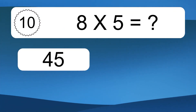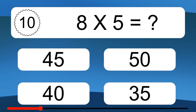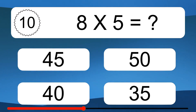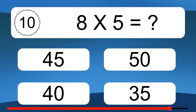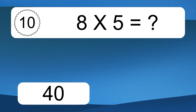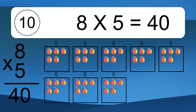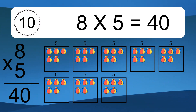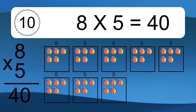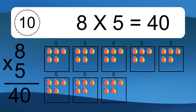8 times 5 equals what? 8 times 5 equals 40. We have 8 boxes, and each box has 5 colorful balls inside. If you count all the balls in all the boxes together, you will have 8 times 5 balls. This equals 40 balls.